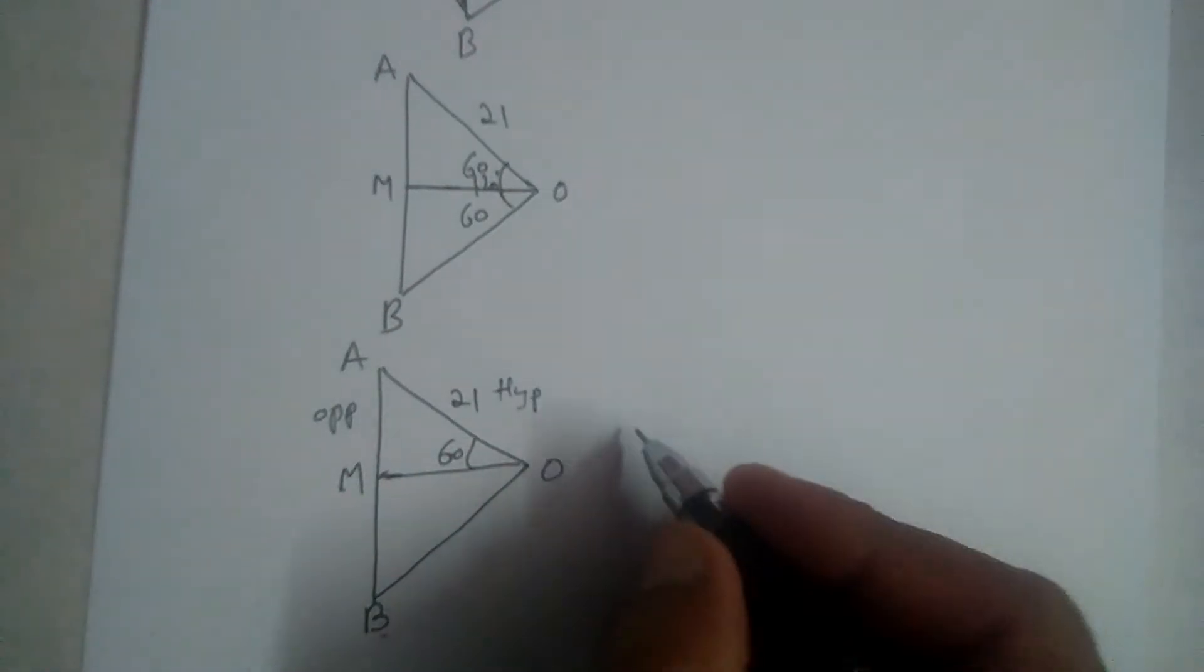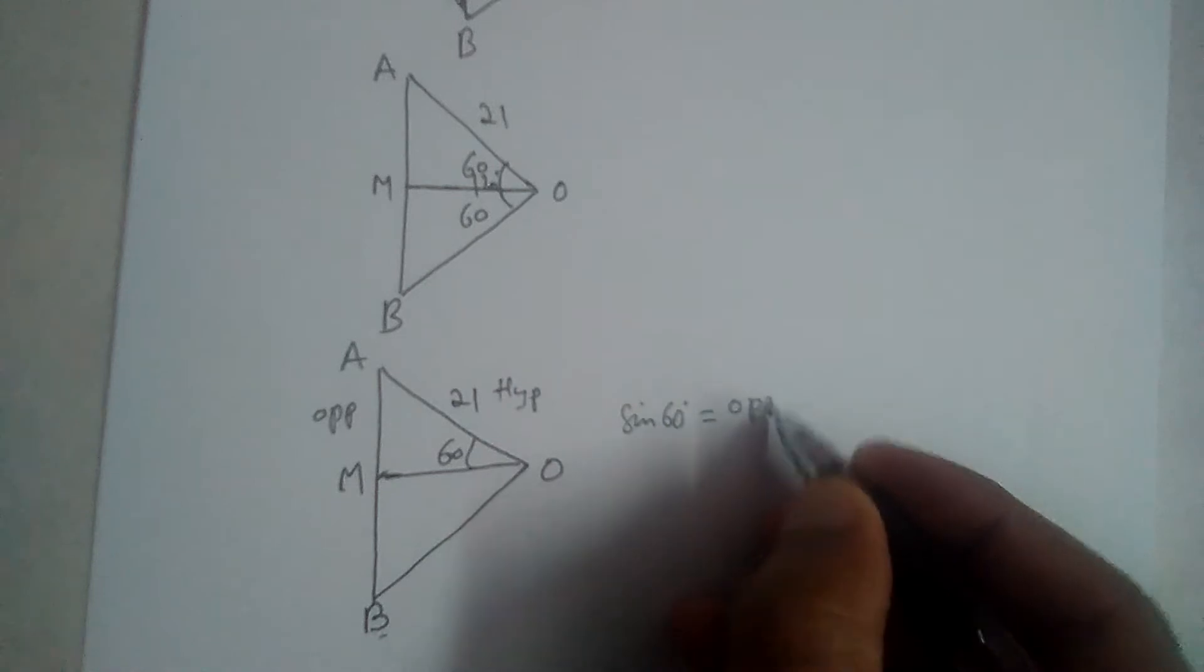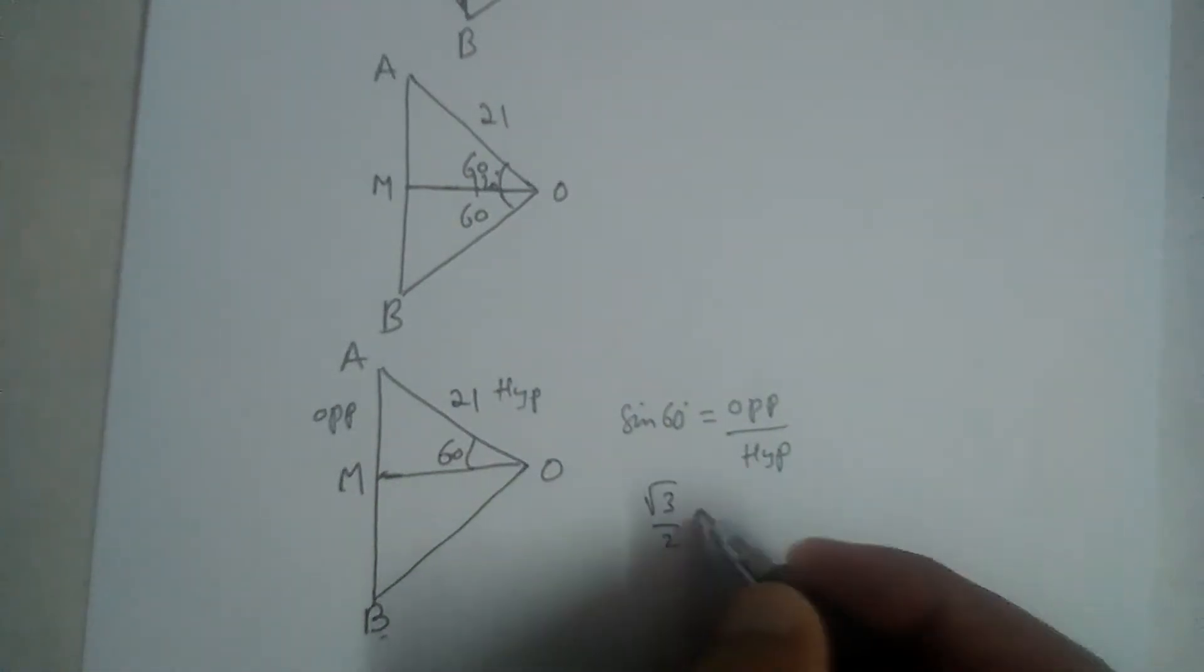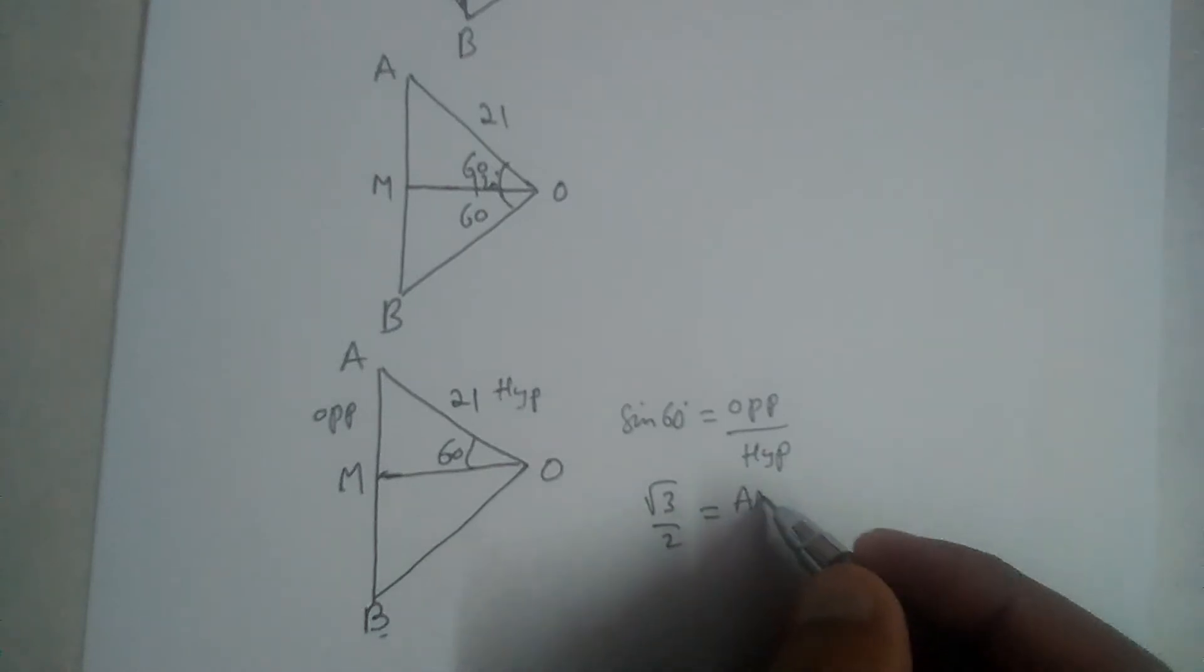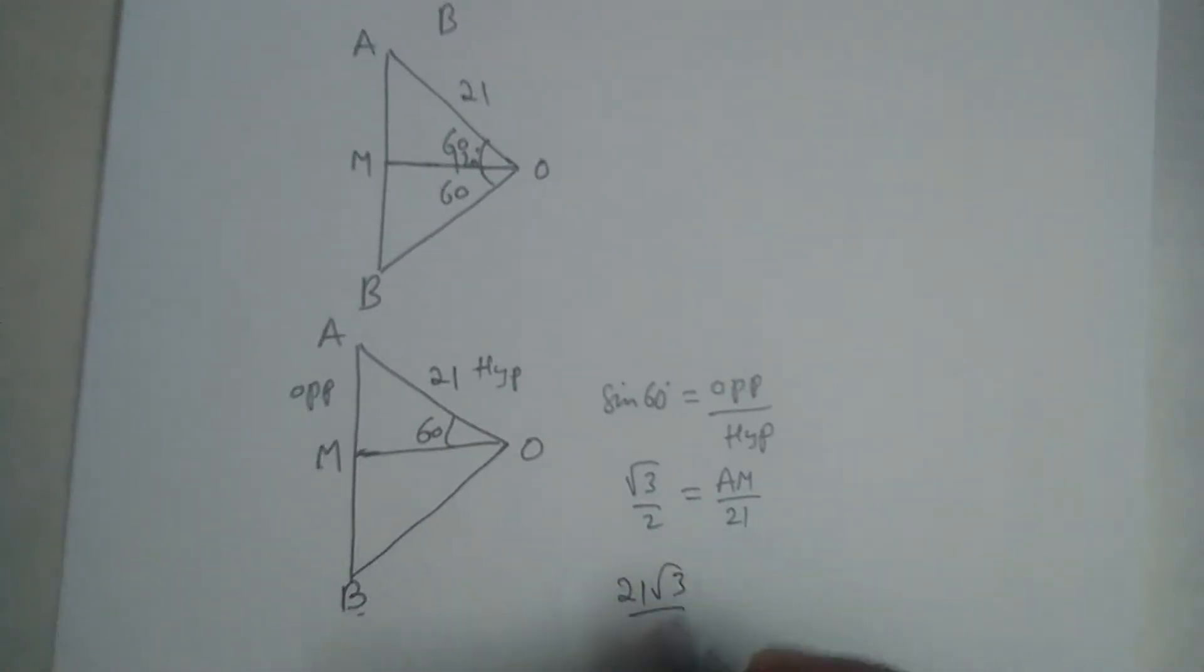So opposite and hypotenuse will come in sin. So sin 60 degrees is equal to opposite divided by hypotenuse. Sin 60 is root 3 by 2, opposite is not known, let it be AM, so this is hypotenuse 21. So 21 goes on the other side, 21 root 3 by 2 will give us AM.